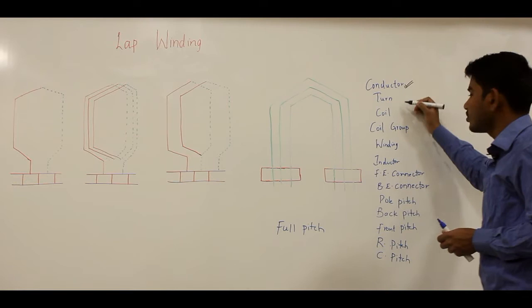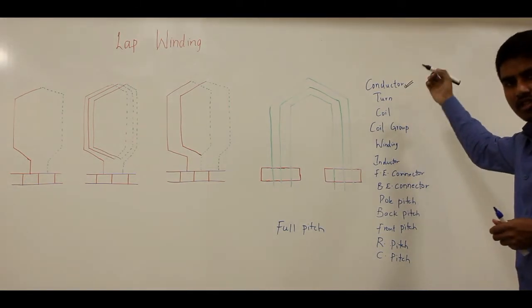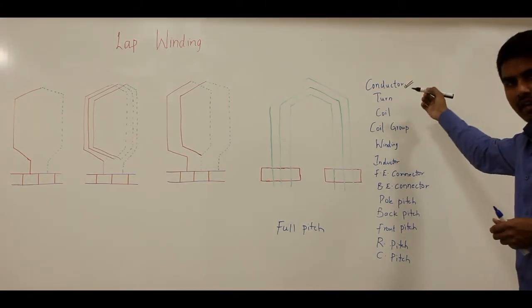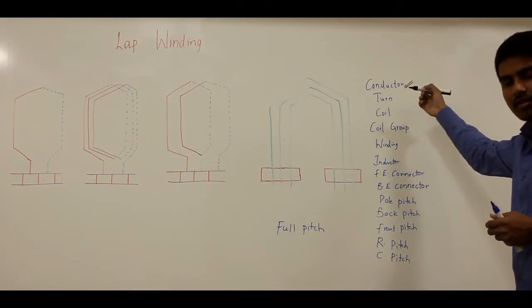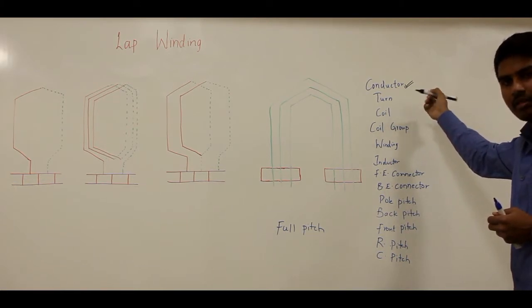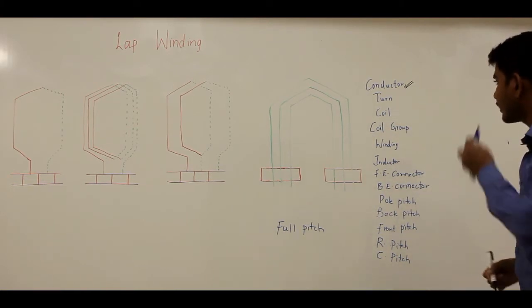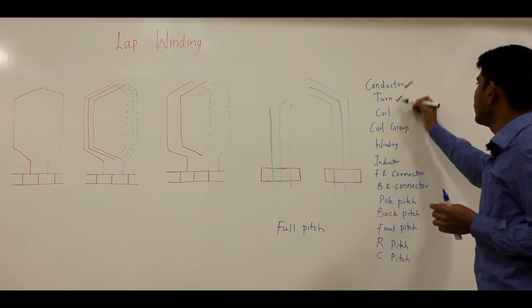First, the conductor is defined as the individual length of wire lying in a magnetic field. Any wire lying in a magnetic field can be termed as a conductor.